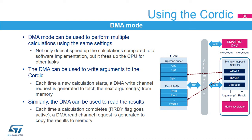DMA mode is very efficient when performing multiple calculations using the same settings. It is not possible to modify the Cordic CSR register by DMA; consequently, if the settings need to be changed, the DMA should be stopped first and restarted once the new settings have been programmed. DMA write can be combined with DMA polling or interrupt read methods. Pipelining is always used in DMA mode. DMA write requests are enabled by setting the DMA WEN bit in the Cordic CSR register, and DMA read requests are enabled by setting the DMA REN bit.